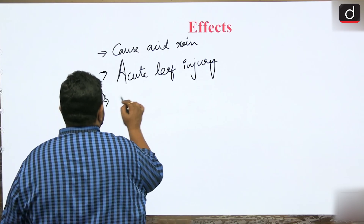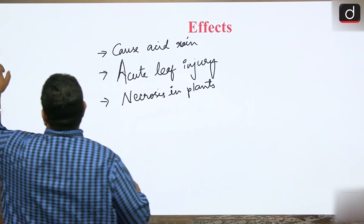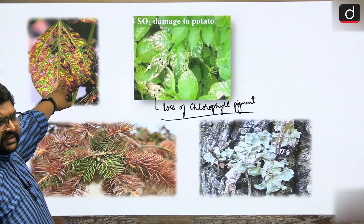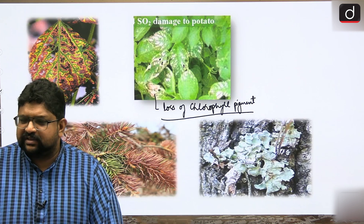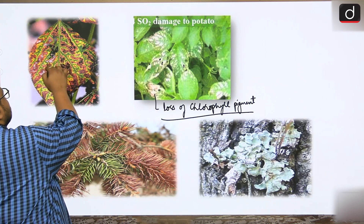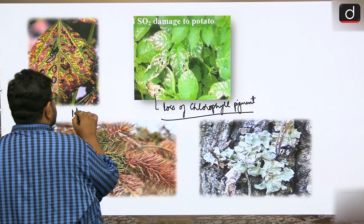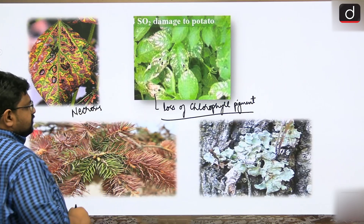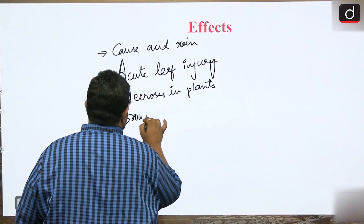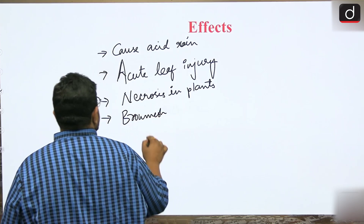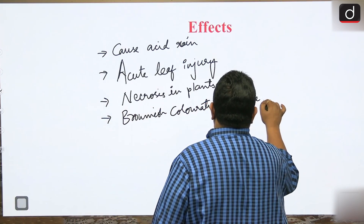The second effect is that SO₂ causes necrosis in plants. Necrosis means death of cells - the leaf tissues turn completely brown and die. This brownish dead appearance is the symptom of excess sulphur dioxide. Another related symptom is brownish coloration and necrosis of pine needles.